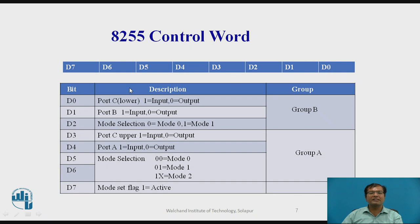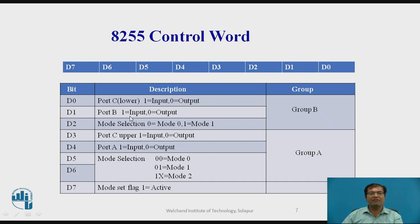D0 bit supports port C lower part. If this bit is 1, it acts as input; if it is 0, it acts as output. Then D1, which supports port B — similarly, if it is 1, it is input; if it is 0, it is output.